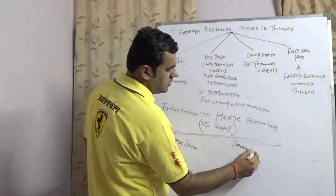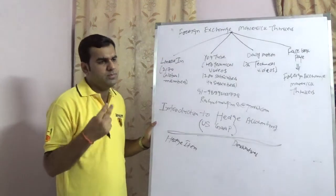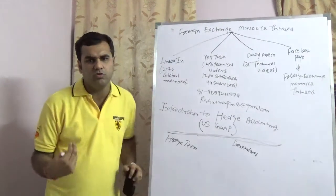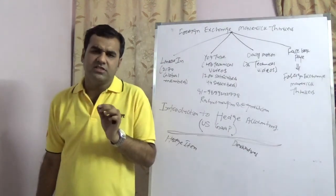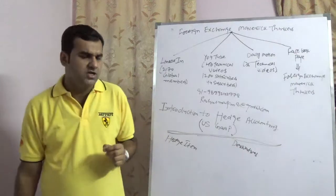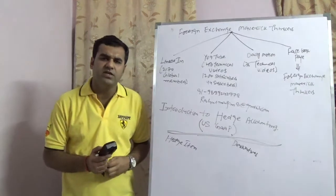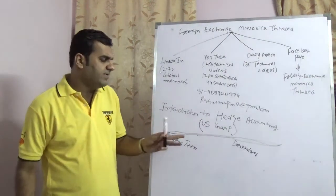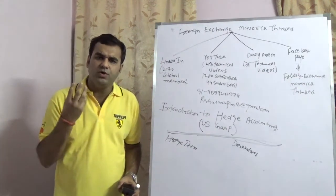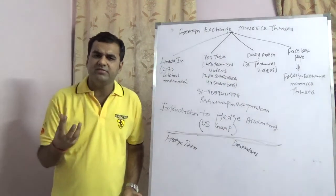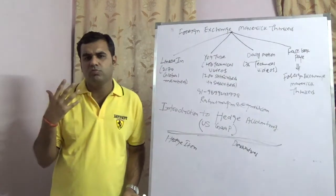The second pillar is known as the derivative. Derivatives refer to the derivative contracts you are taking. These derivatives could be plain vanilla, could be non-plain vanilla, or other types. Hedge accounting is nothing but the accounting of your hedges. The two important pillars of hedge accounting are the hedged item and the derivative. The hedged item could be your receivables or your payables; derivatives can be further classified as plain vanilla derivatives or exotics.